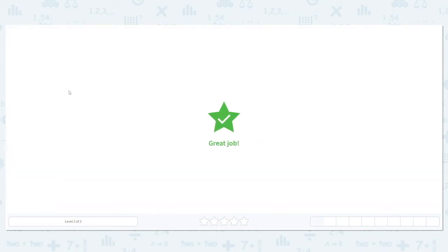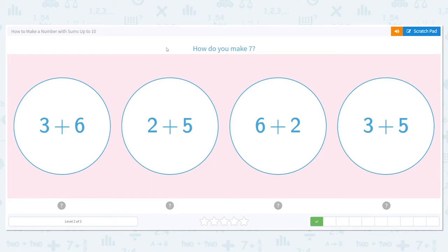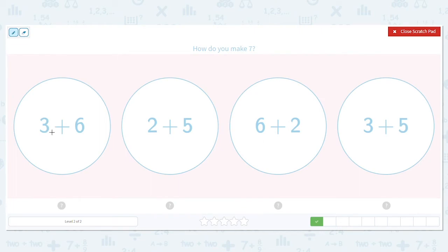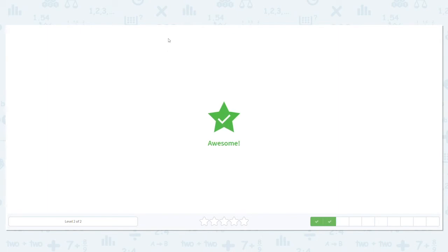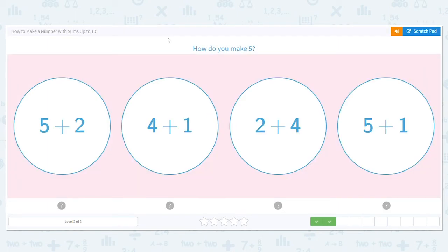Let's do another one. How do you make 7? Well, what's 3+6? 3+6 is 9, so that doesn't work. But what about 2+5? 2+5 is 7, so that means that's our answer.